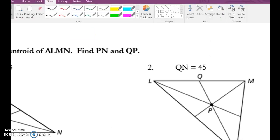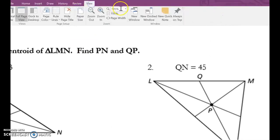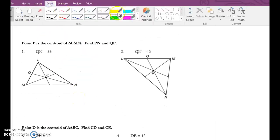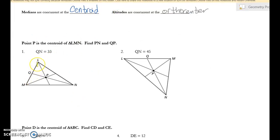So I know that QN, right here, that whole thing is 33. So what I do to find out what each section is, remember it's cut into thirds, so I divide by three. And so that means this piece right here is 11. But then this is two of those, so it's 22. So P to N is 22, and Q to P is 11.